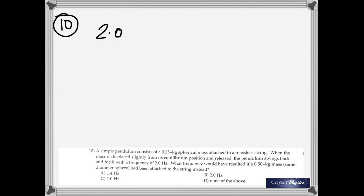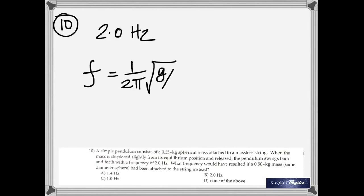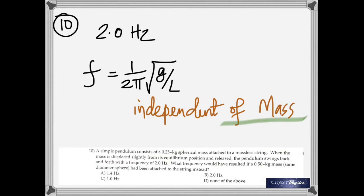The tenth question: a simple pendulum with a 0.25-kilogram mass has a frequency of 2 Hertz. What frequency results if a 0.50-kilogram mass is used instead? The time period of a simple pendulum does not depend on the mass. The formula is (1 divided by 2 pi) times the square root of g divided by length — there's no mass in the equation. So the frequency remains 2 Hertz.